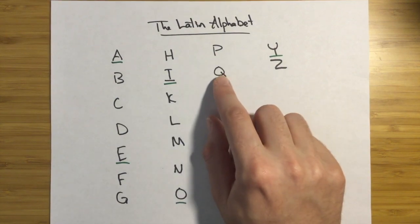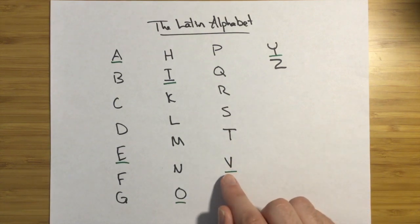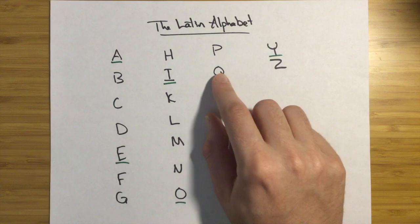P makes a P sound. Q makes a K sound. But it's always followed by a V or a U in some text. So a Kwa sound.